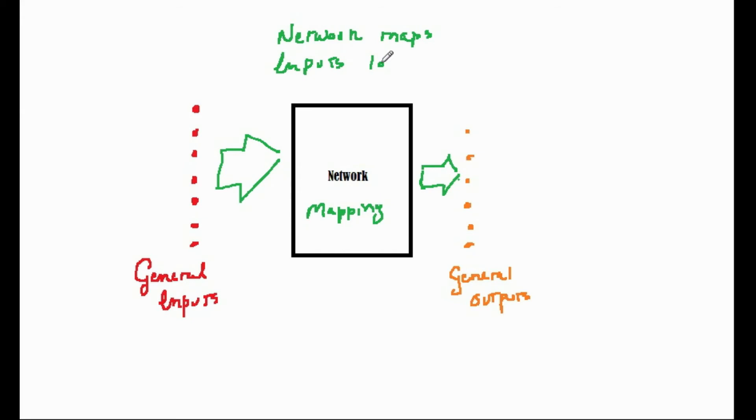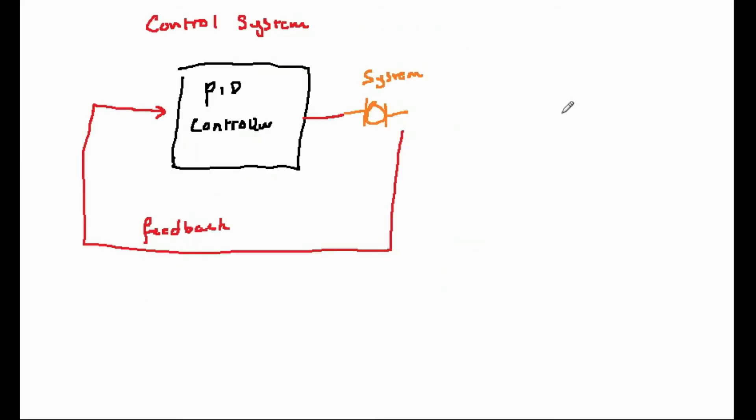Understanding that the network is a general mapping device opens up other applications as well. A good example of these is the one we've just mentioned: